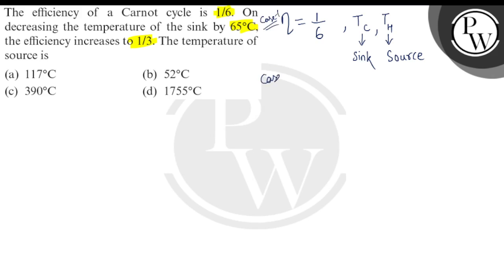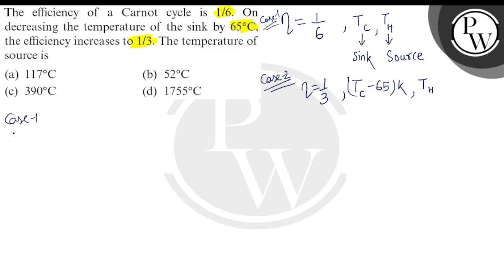Case 2 is given: eta becomes 1/3 — efficiency becomes 1/3 — when TC is decreased by 65 degrees Celsius. So we write TC minus 65 Kelvin. For the source, the temperature TH remains constant throughout the different cases. So for Case 1, we apply the expression for eta: efficiency is equal to 1 minus TC divided by TH.